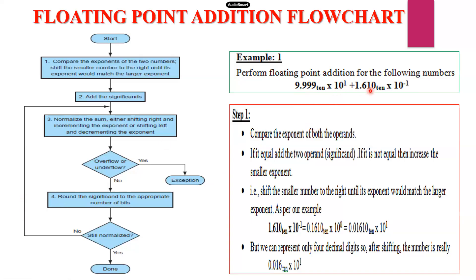Here the first exponent is 10^1 and the second exponent is 10^−1. Since both exponents are not equal, we choose the number with the smaller exponent — that is 1.610 base 10 × 10^−1. We shift the smaller number to the right until its exponent matches the larger exponent. If you shift right one time, the power is incremented: 10^−1 + 1 = 10^0. Still not equal, so shift right one more time and the powers become equal. That completes step one.